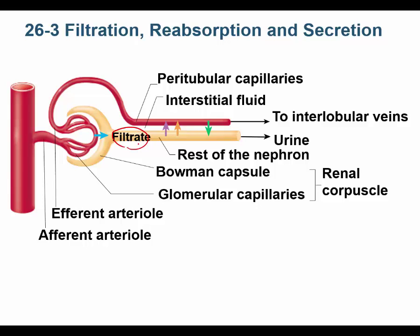What do I mean by modifying the filtrate? As the filtrate travels down the proximal convoluted tubule, the descending limb of the loop of Henle, the ascending limb of the loop of Henle, the distal convoluted tubule, and the collecting duct — all of these segments can modify the filtrate.